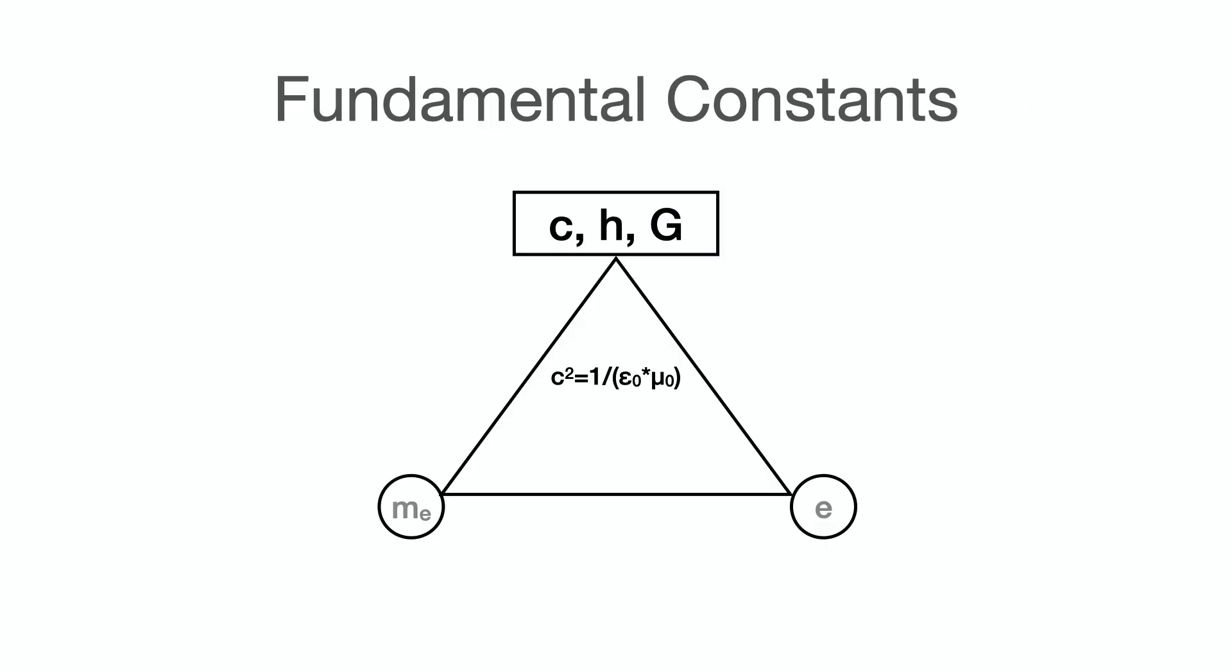These three fundamental constants, C, H, G, are related to the mass of the electron. C, H and Epsilon zero are linked to the charge of the electron.